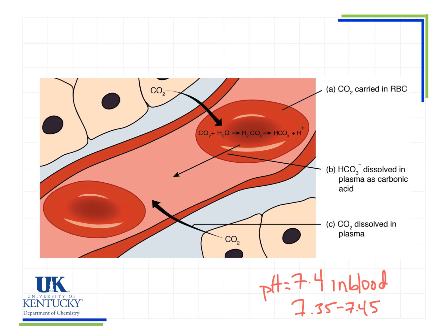One thing that affects this greatly is the amount of CO2 in the bloodstream. If we have too much CO2, we're going to shift the reaction to the right, because CO2 appears here as a reactant. Le Chatelier's principle tells us the reaction will shift right and we'll form more H plus. As the H plus concentration increases, the pH decreases because pH goes down with higher concentrations of H plus.